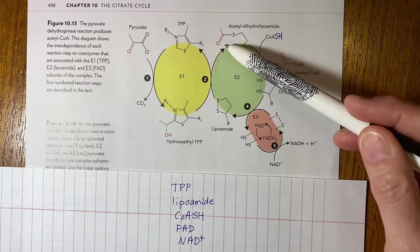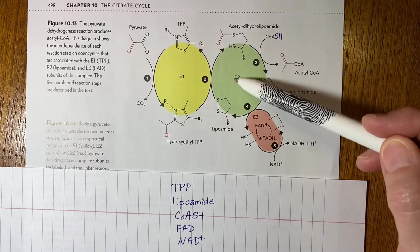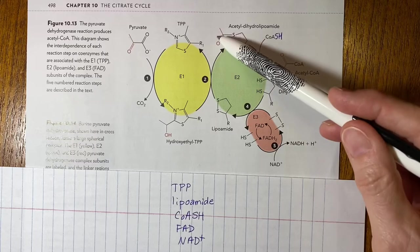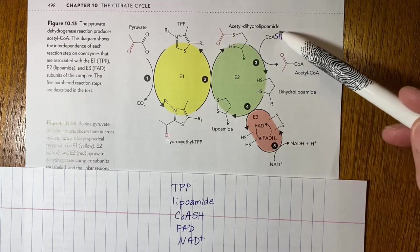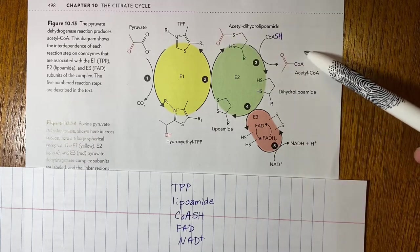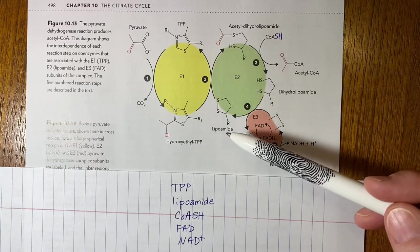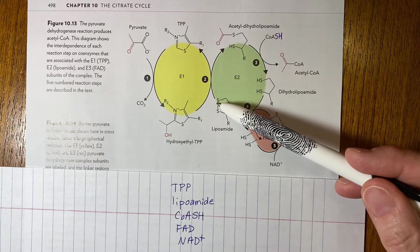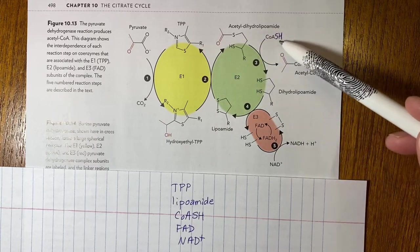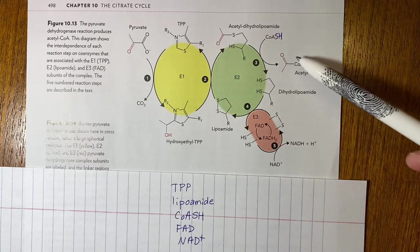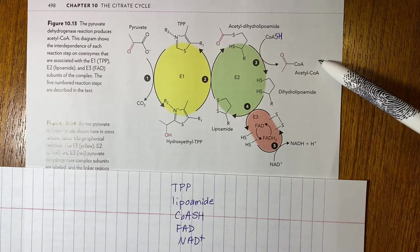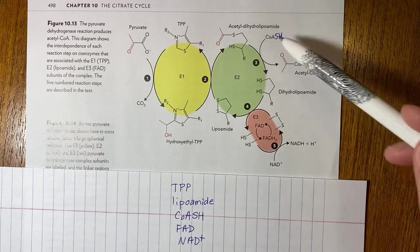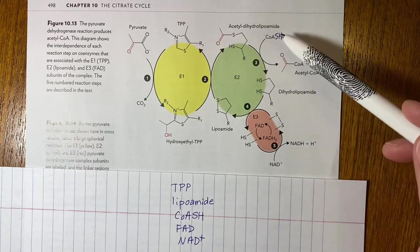Lipoamide carries it to the part of the enzyme on E2 where it can interact with coenzyme A. The acetyl group at this point is transferred to coenzyme A and makes acetyl-CoA. So lipoamide's role is to carry the hydroxylated which turns into an acetyl group to coenzyme A and then that product is released. So that's TPP, lipoamide and coenzyme A. That's the role of those three.